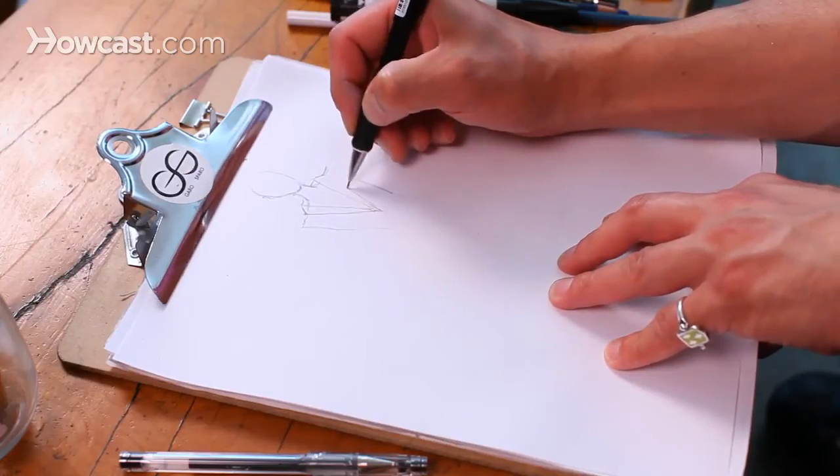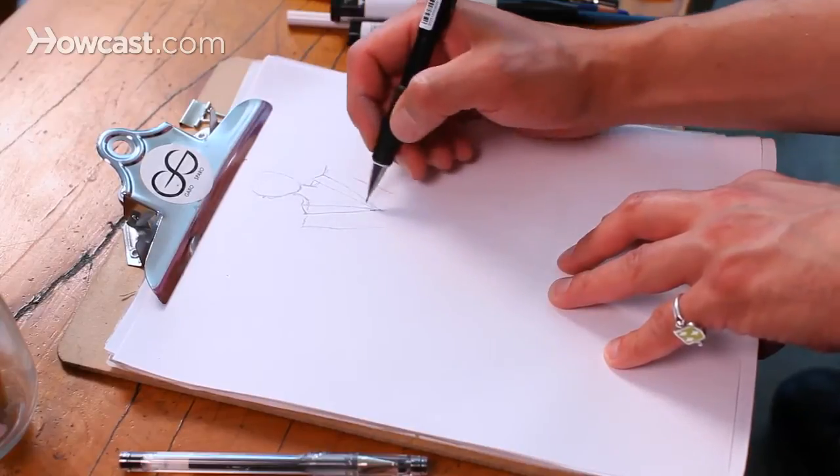And then, here we go. We draw our outer line of our collar, which I'm doing like a 20s style shawl situation.